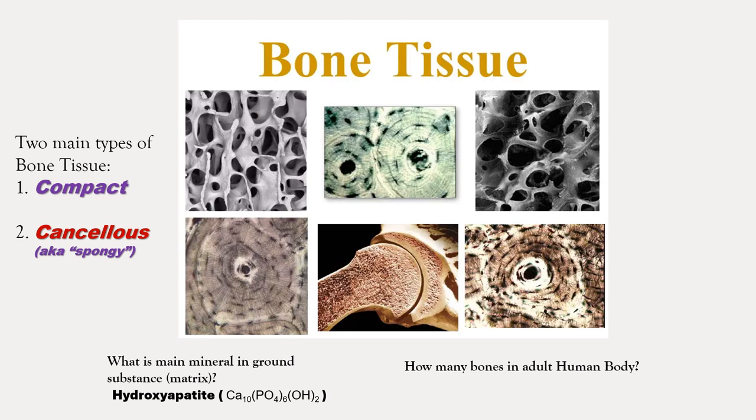How many bones are in the adult human body? There is a little variance — for instance, if you have two spinal bones fused together, that becomes one bone. The answer is about 206 on average. The vast majority of adults have 206 different identified bones.